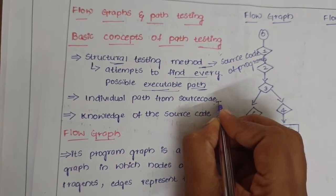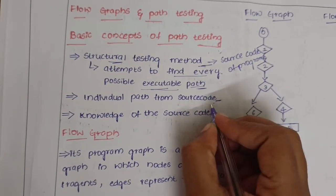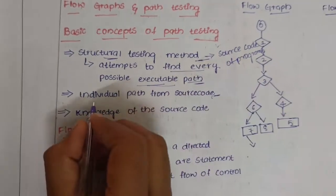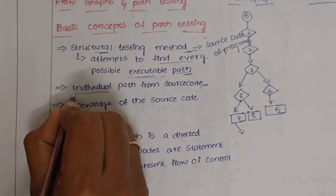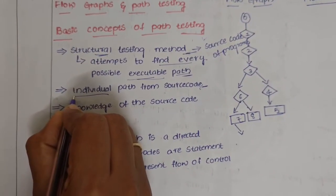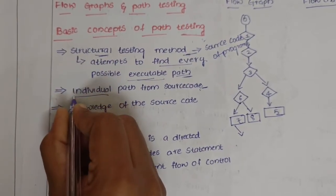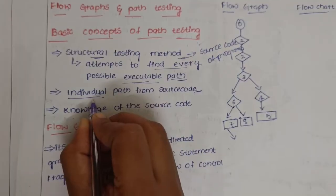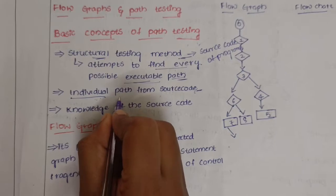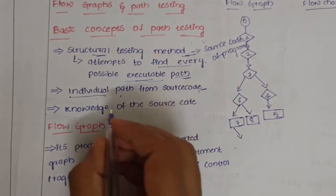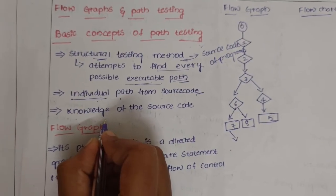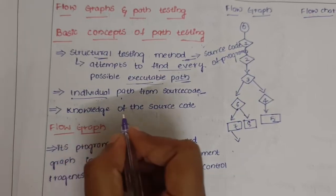Individual paths from the source code are identified and tested. In a program there may be one, two, or many more paths. As many paths as possible are found in order to maximize the coverage of each test case. Knowledge of the source code is used to define the test cases and examine the outputs.